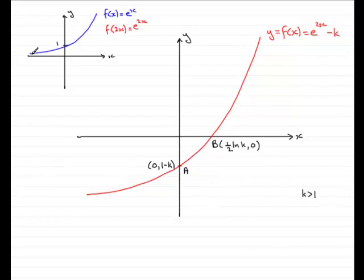In other words, what you would get now is that this graph of e to the x would come in, something like this, and go up like that. Points like this one are halved towards the y axis.